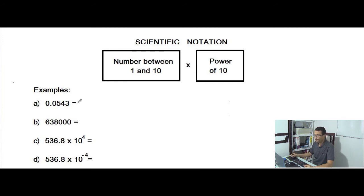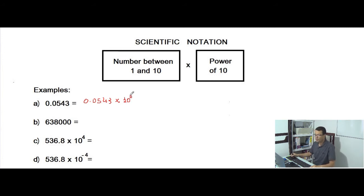Let's see the first example. We have here a small decimal number. I can represent it as 0.0543 times 10 to the 0 power, because 10 to the 0 is equal to 1 and 1 times this number is equal to itself. But this number, even though it is multiplied by a power of 10, is not in scientific notation, because this number is less than 1 — it is not in the interval between 1 and 10.